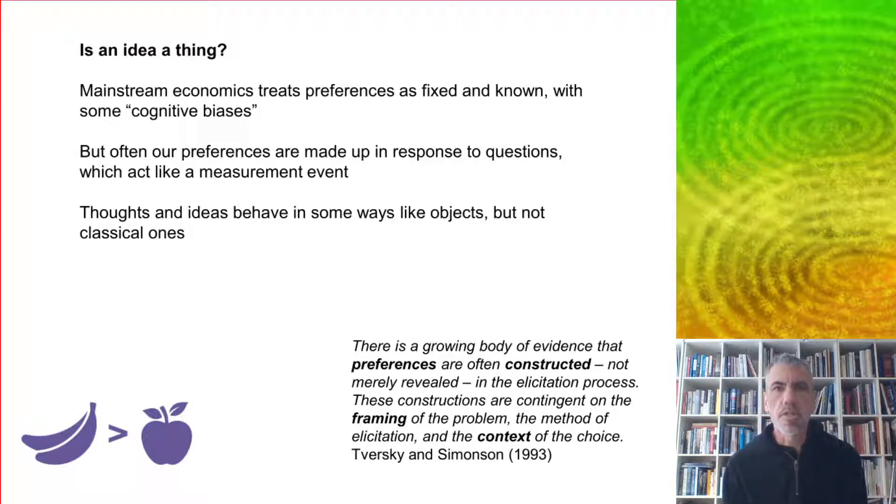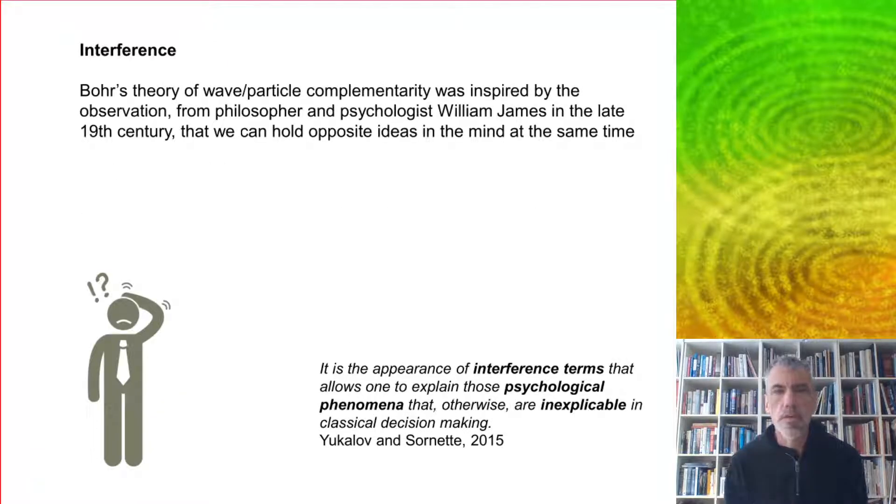And in economics, we're used to treating preferences as sort of fixed and known objects with some cognitive biases. But often our preferences are made up in response to questions, which act like a kind of a measurement event. So thoughts and ideas behave in some ways like objects, but they're not classical objects. In physics, Bohr's theory of wave particle complementarity was actually inspired by the observation from psychologists that we can hold opposite ideas in the mind at the same time in superposition. And in fact, it's these interference terms which play a very important role in quantum cognition, as we'll see.